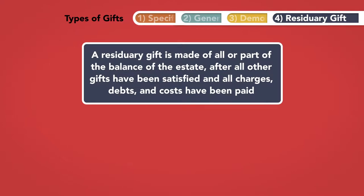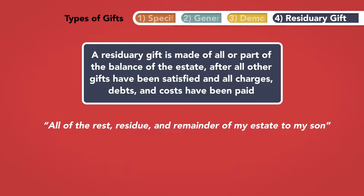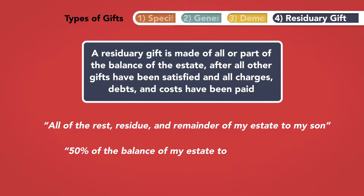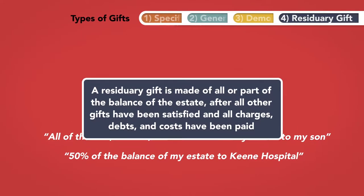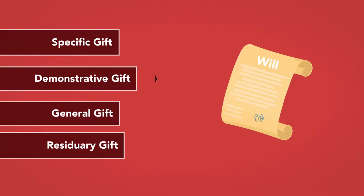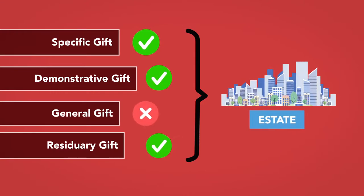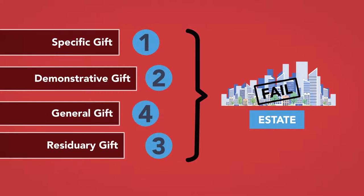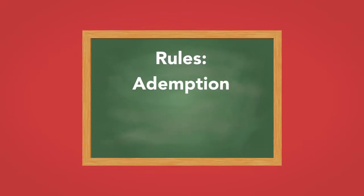4. Residuary gift. A residuary gift is made of all or part of the balance of the estate, after all other gifts have been satisfied and all charges, debts, and costs have been paid. An example of a residuary gift would be all of the rest, residue, and remainder of my estate to my son, or 50% of the balance of my estate to Keene Hospital. All four types of gifts are valid, and any given will may contain one, some, or all of them. The practical distinctions among them manifest themselves where the estate cannot satisfy all of them, or they fail for whatever reason, and priorities must be allocated. This brings us to the discussion of when gifts fail, the rules of ademption, abatement, and lapse.